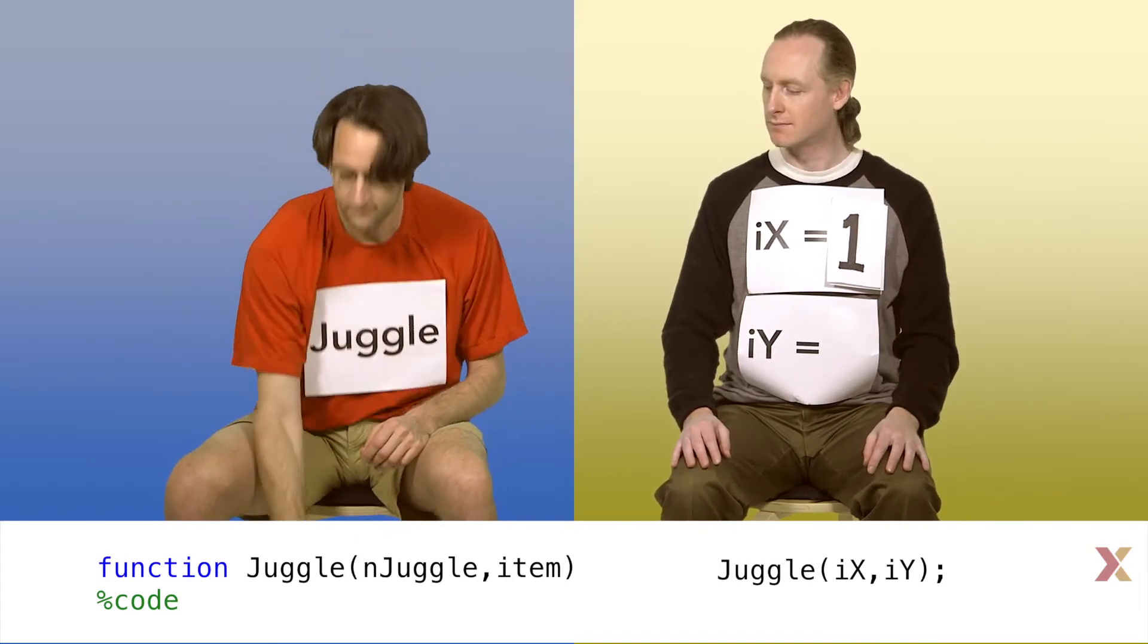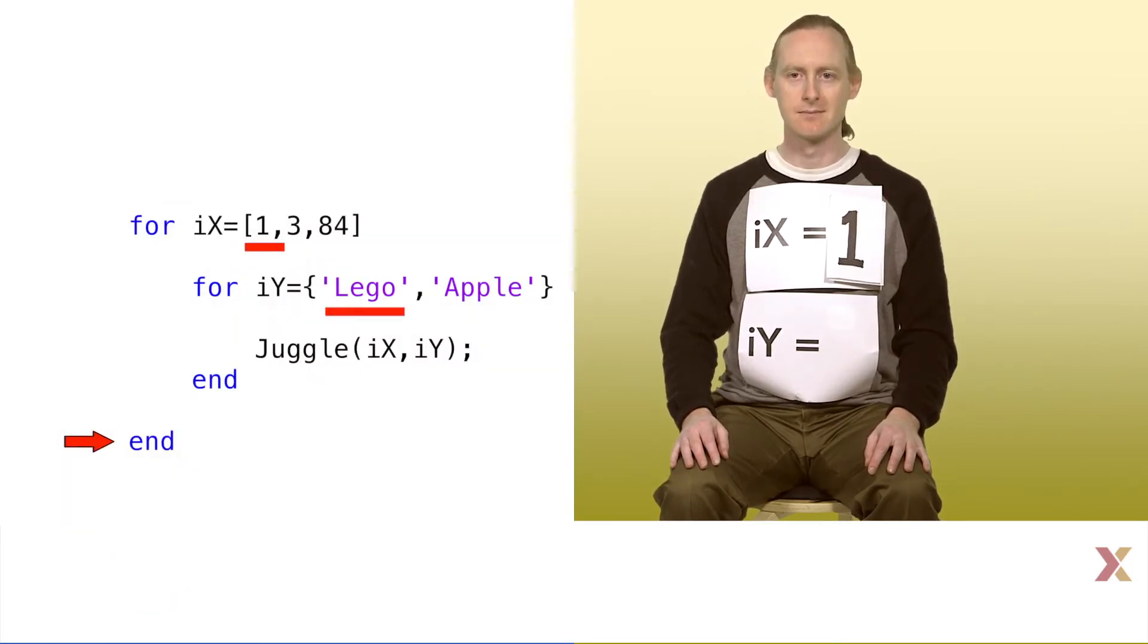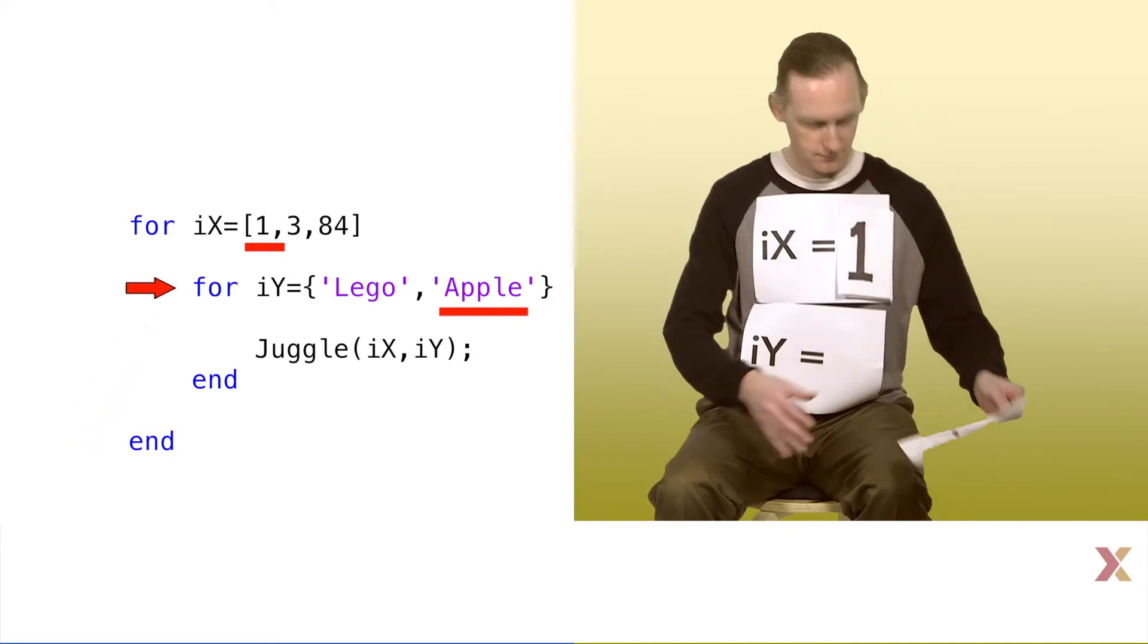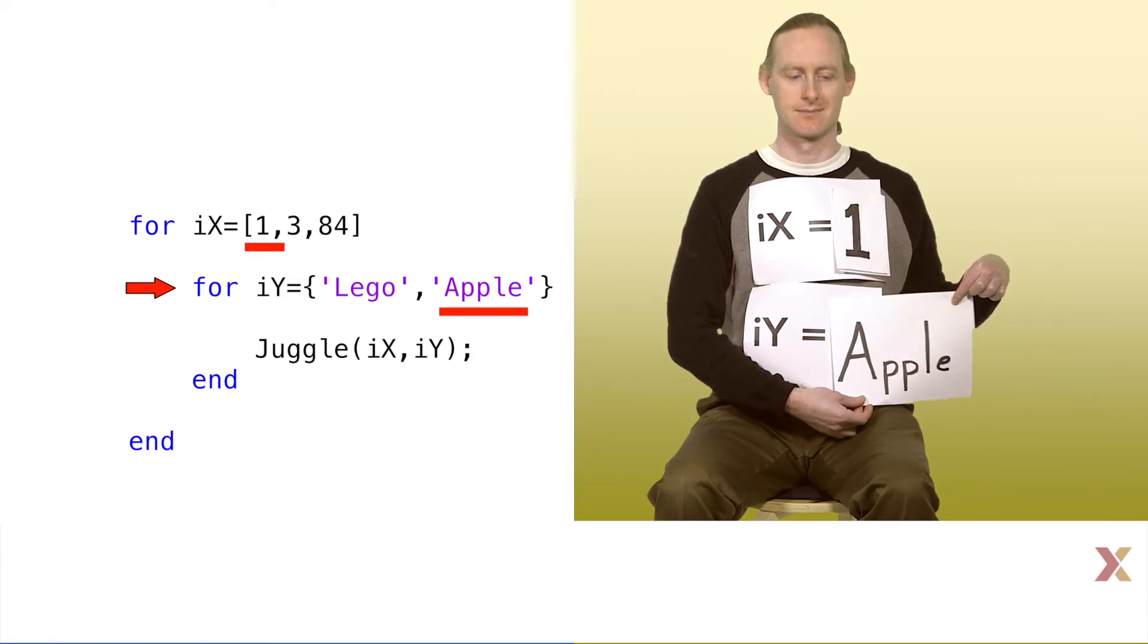Note that in this case, the function is not returning any values when it's done. When we hit the first end statement, we repeat the innermost for loop. The value of ix has not changed. Only the value of iy has changed. In this case, the second value in our array is a cell with the word apple.